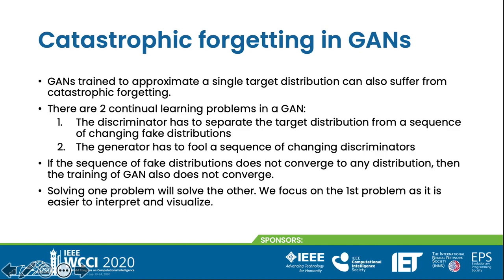That poses two different continual learning problems to each of the players in GAN. First, the discriminator has to separate the target distribution from a sequence of changing fake distributions. Second, the generator has to deal with a sequence of changing discriminators. If the sequence of fake distributions does not converge, then GAN training does not converge. We focus on the first problem as it is easier to interpret and visualize.